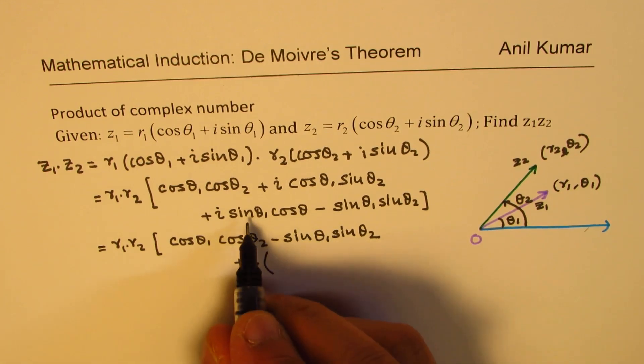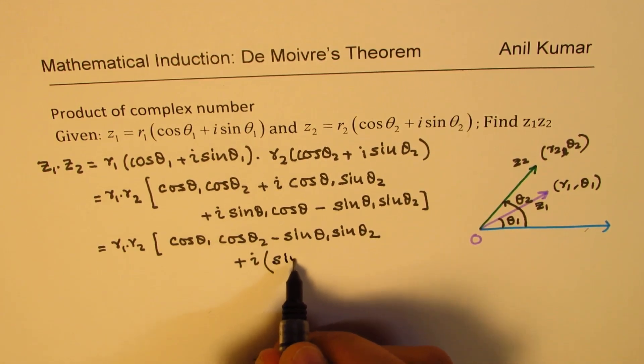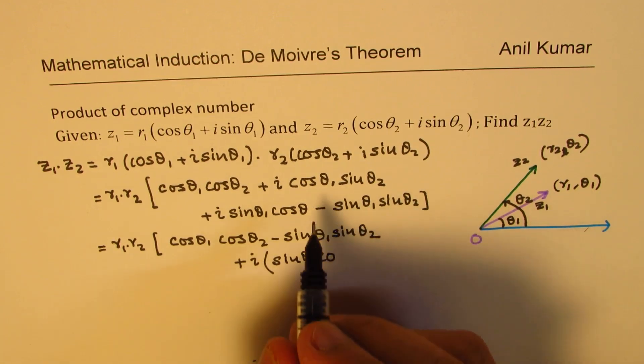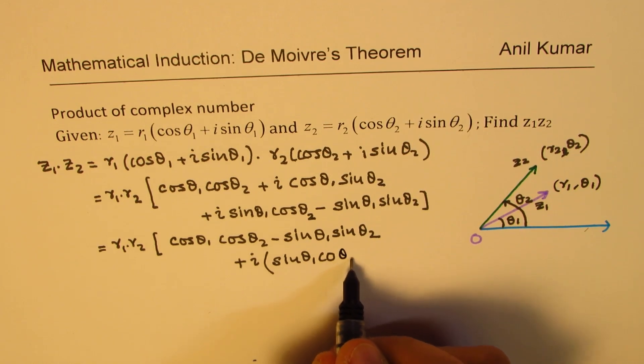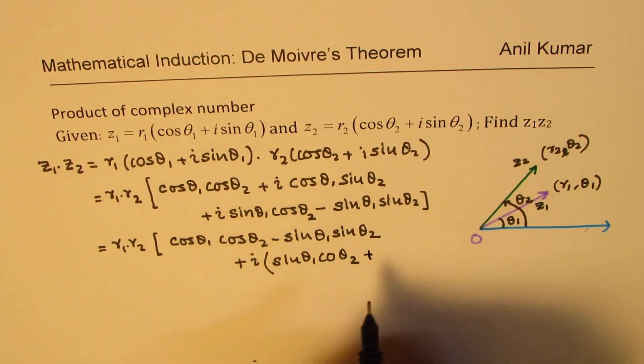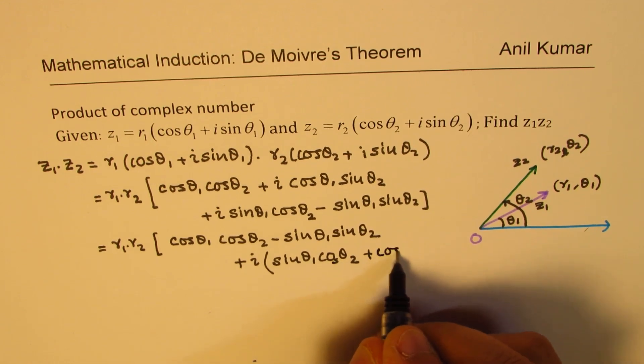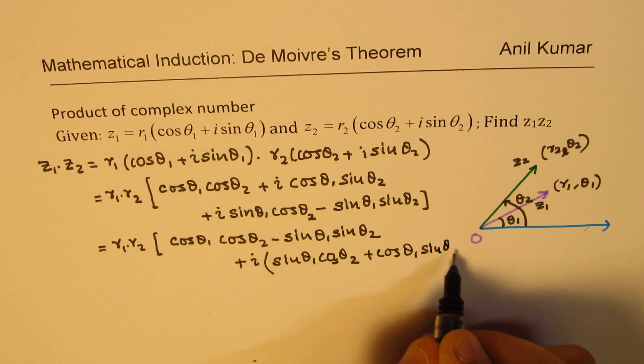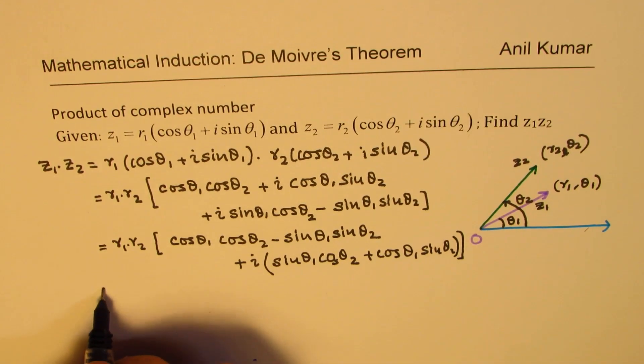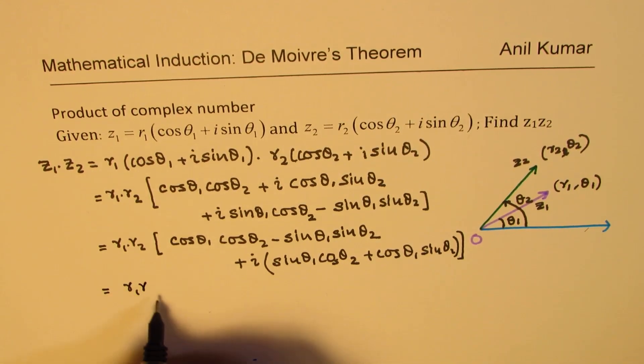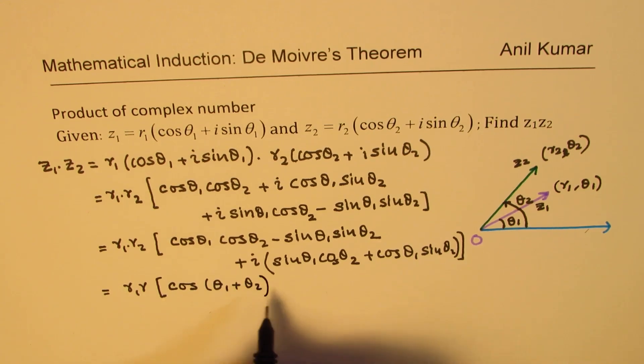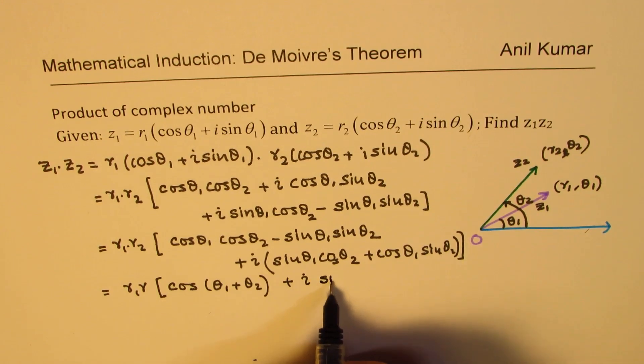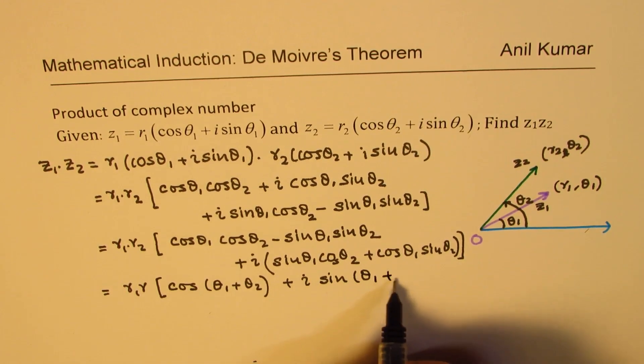So we have the term here which is sin θ1. Let me write this term first: sin θ1 cos θ2 plus cos θ1 sin θ2. Now we could write this as product of r1 and r2 and that is cos(a + b) formula, so we get cos(θ1 + θ2) and here we get i sin(θ1 + θ2).